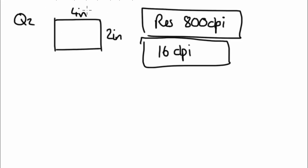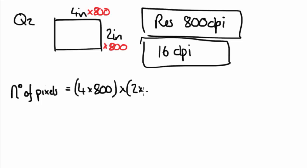What you'd actually do here is you would go 4 times 800, and that's times 800. So to find the number of pixels, we'll just equal 4 times 800 and then multiply 2 times 800. So that would be 3200 times 1600.